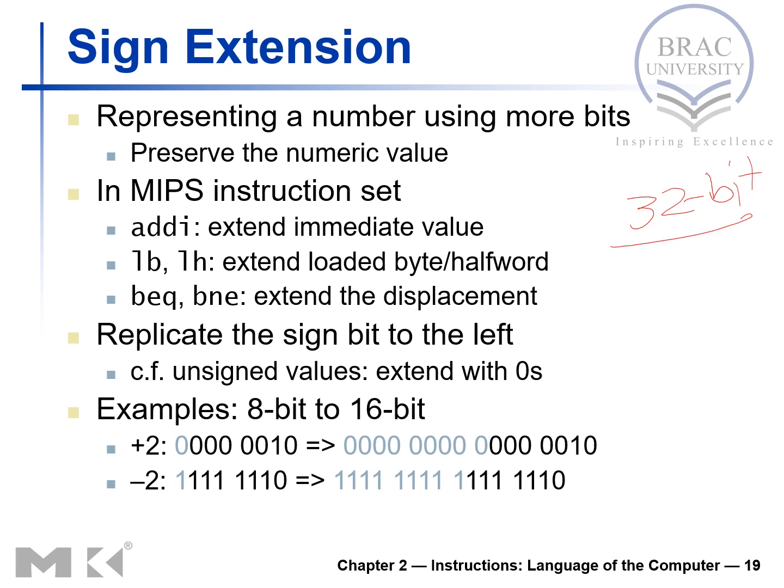As the name suggests, sign extension — we need to consider the sign of the original value. If this is a positive value, when we are extending, we put zeros in the extended bits, which keeps the numeric value the same. If the value is negative, we put ones in the extended bits, which also keeps the numeric value the same.